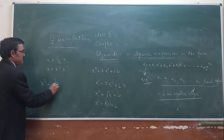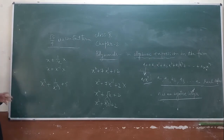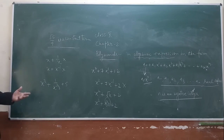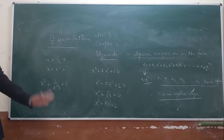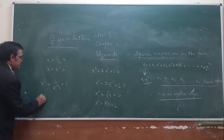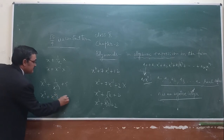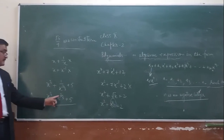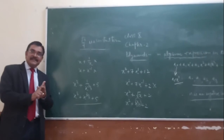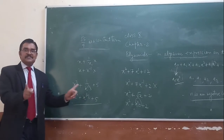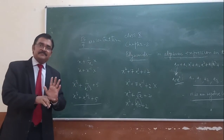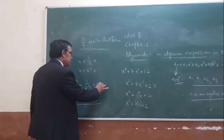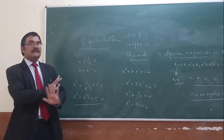If I write x plus 1 upon x raised to the power minus 2/3 plus 5 — the power is negative or fractional, so it cannot be a polynomial.